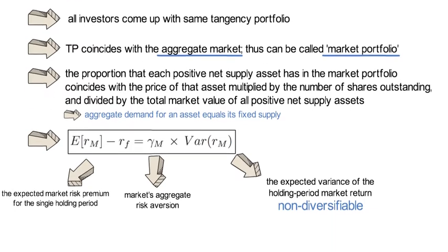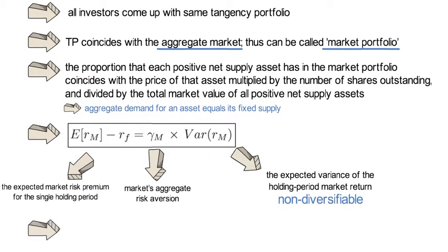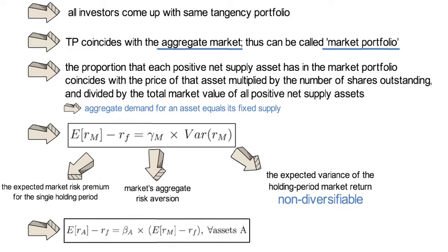Consequence 5: the expected risk premium of an individual security is proportional to the expected market risk premium, where the proportionality coefficient beta_A is defined as the covariance of Asset A's return with the market return divided by the variance of the market return. Beta_A measures the amount of systematic risk that asset A contributes to the market's total risk.